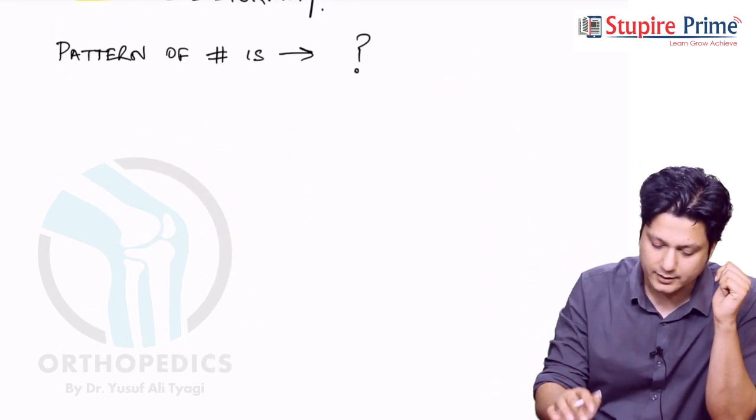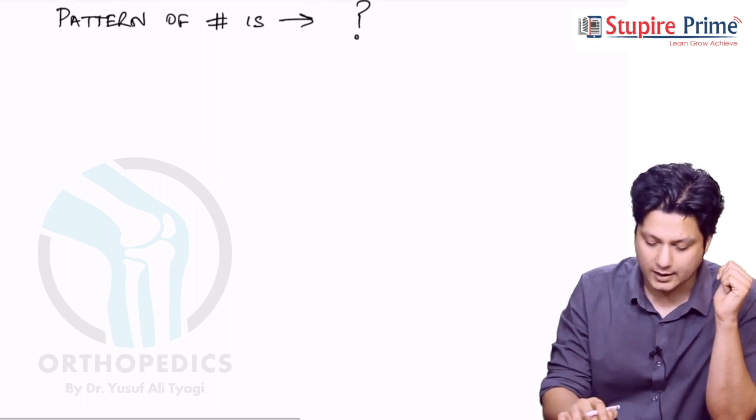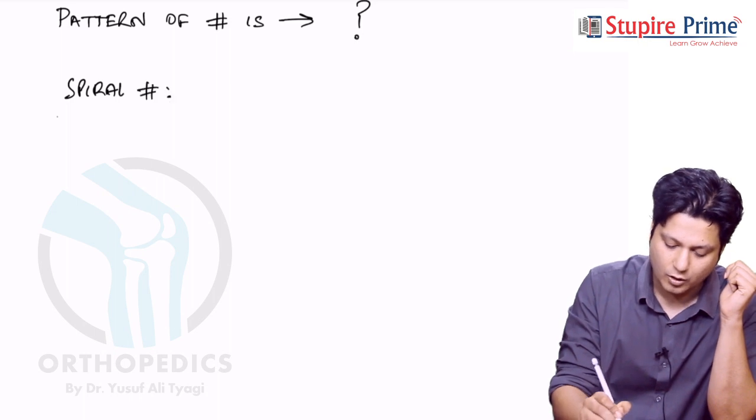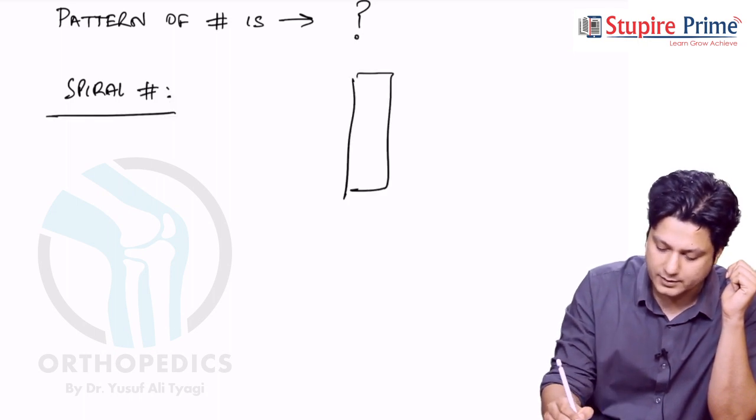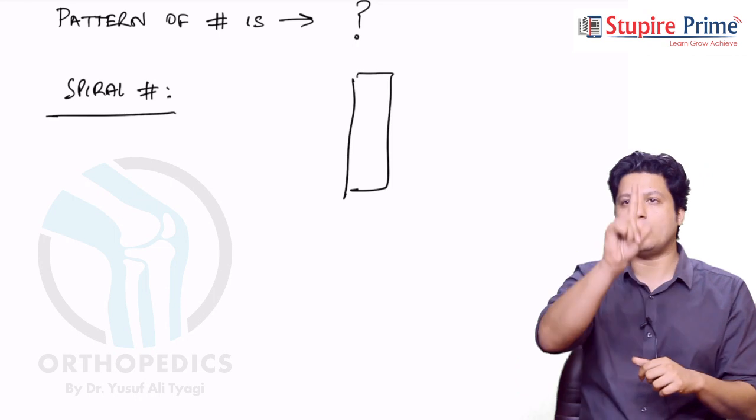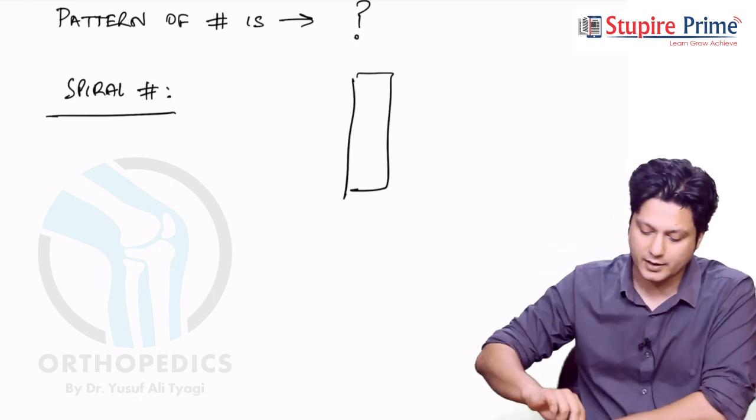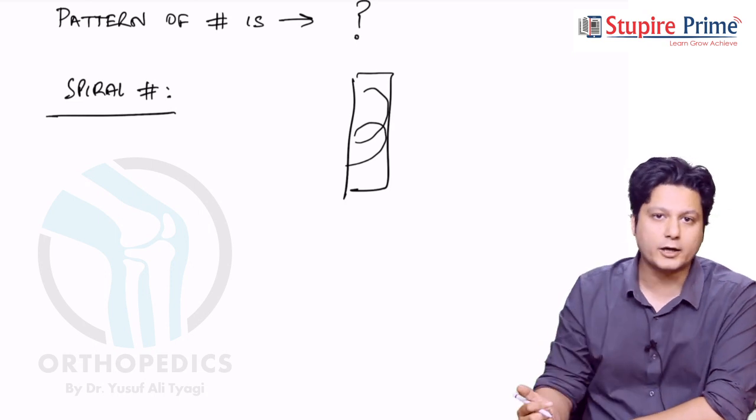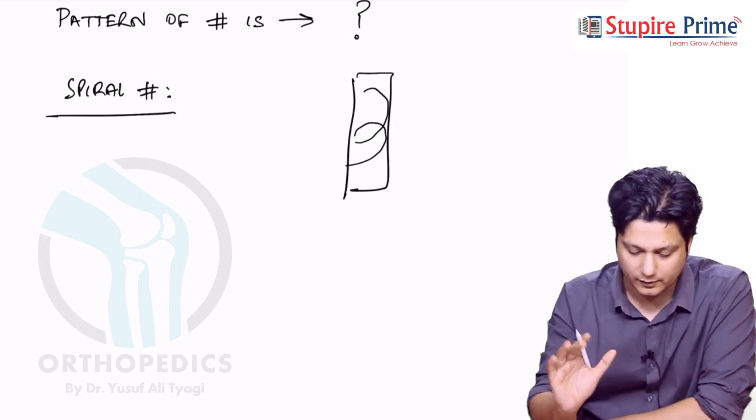In order to understand this answer for this particular question, you need to understand what is a spiral kind of fracture. All of us have seen a spiral staircase that runs along the long axis in the center. Similarly, if a bone is broken spirally along the long axis or the longitudinal axis, it is known as a spiral fracture.